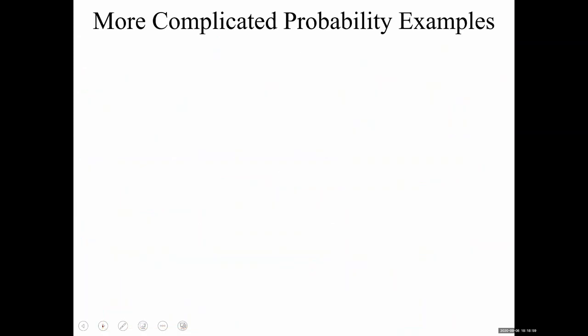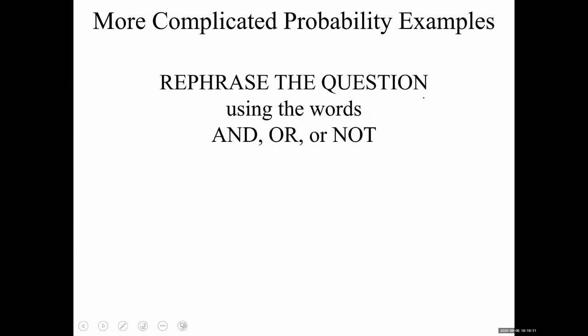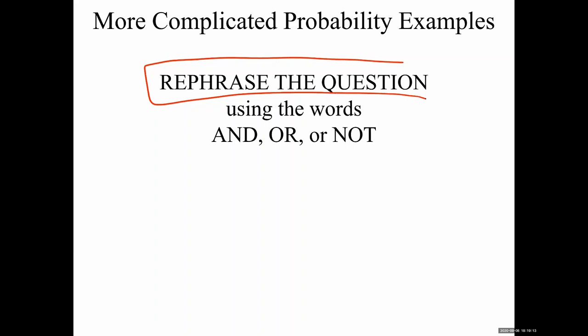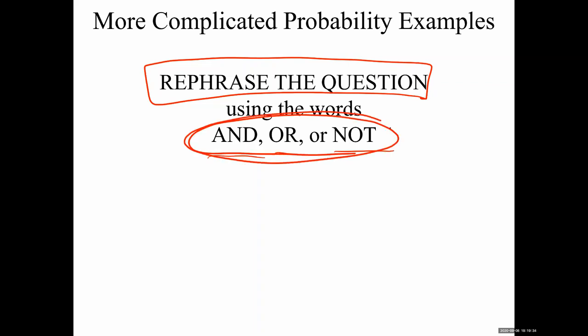We're going to look at a couple of examples. When you have a more complicated probability problem, the answer is you rephrase the question. We did an example last class of rephrasing the question, but we're going to get more practice. If the probability problem is more complicated, you want to rephrase the question and get the words AND, OR, or NOT in there, because if those words show up, we have formulas that involve those things.